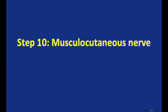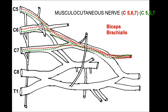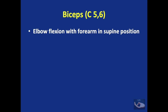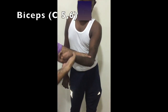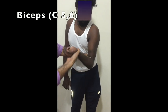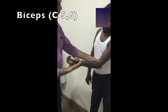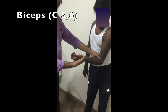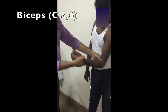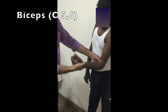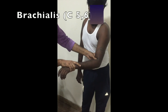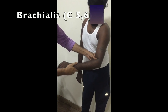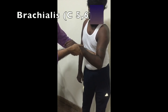The motor supply of the musculocutaneous nerve is mainly tested by examining the biceps and brachialis. Biceps function has two components: elbow flexion and forearm supination. Elbow flexion is tested and the power is noted. Supination is tested with the elbow kept at 90 degrees of flexion. For the brachialis, elbow flexion is tested with the forearm kept in total pronated position and the patient asked to flex the elbow.